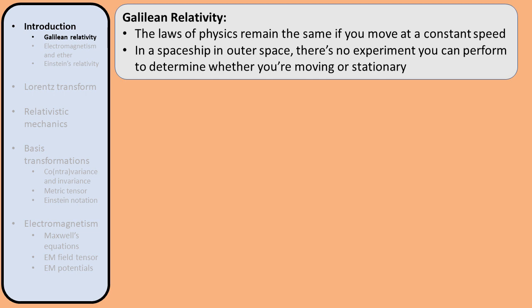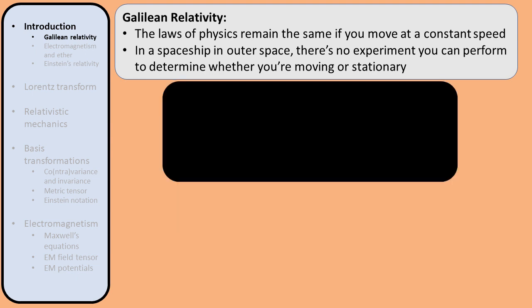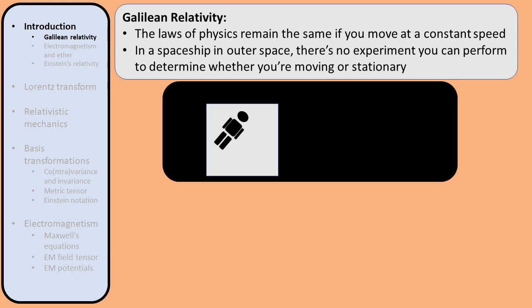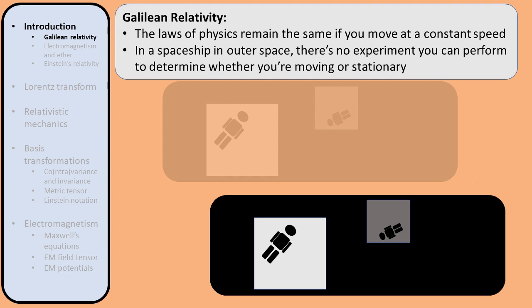If you're on a moving train, you could look outside the window to see if you're moving, because you're observing motion with respect to the landscape around you, which serves as a fixed reference point. But what if you're somewhere in outer space, where you can't see any stars or planets that could serve as a fixed reference point? If you're floating around in your space box, and you see another person floating in their space box, how can you tell if they are moving or if you are moving? According to Galilean relativity, it is impossible to tell, because the laws of physics are exactly the same in both reference frames. Therefore, there is no experiment that you can perform in your space box to tell whether you're moving or stationary.